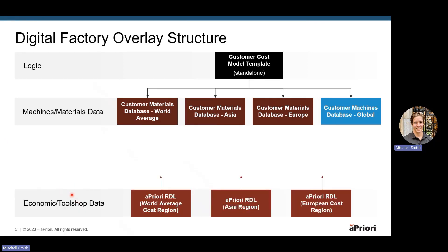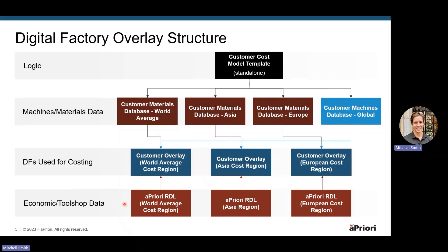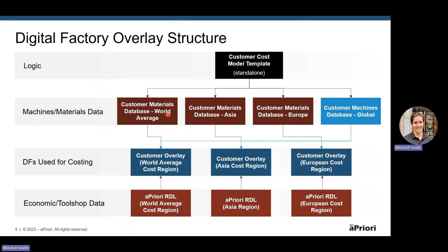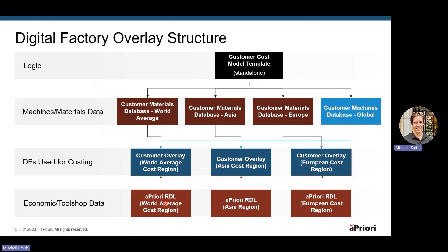Next, we have economic and tool shop data. These are regional — information that may change depending on the region that you're costing with. This information is pulled directly from our Apriori RDLs, regional data libraries, that represent things like labor rates that may change on a region-to-region basis. And then pulling this all in, this is where our overlay or costing digital factory is created. All of these template digital factories are inherited into a custom customer overlay. Depending on the region, we would want to inherit a different materials database and a different economic and tool shop data RDL. These are building up an inheritance structure to make it specific to where you update certain information.